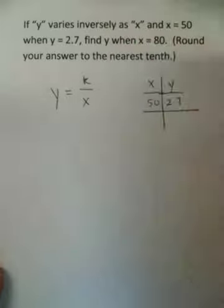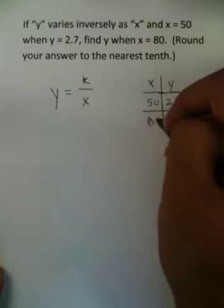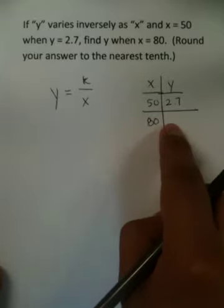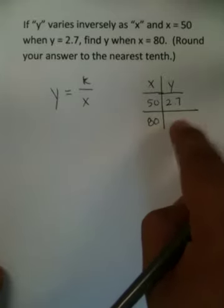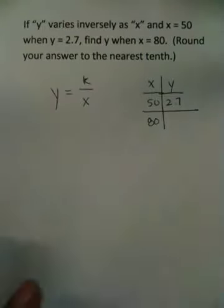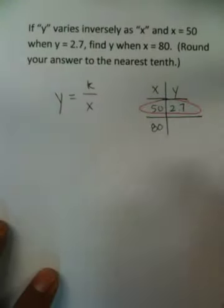They then go on with the problem. They say, find y when x is 80. So basically, they're trying to get you to use another input to get an output. The problem is, you can't find out what this y is until you know what this k is. And the only way you're going to be able to find that k is if you use the information given originally.